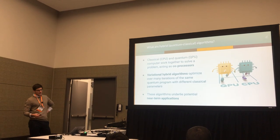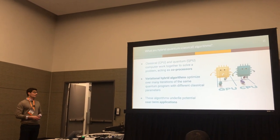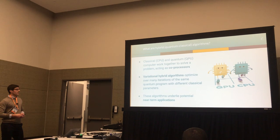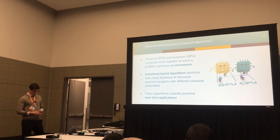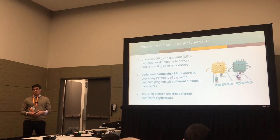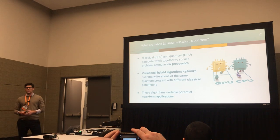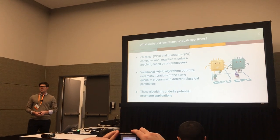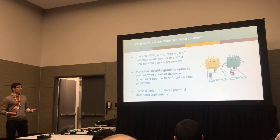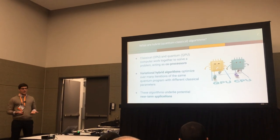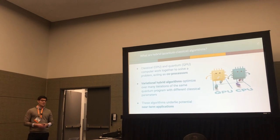Hybrid algorithms are ones in which a classical computer, or CPU, and a quantum computer, or QPU, work together to solve a problem, essentially acting as co-processors. For this talk, we'll be focusing on variational hybrid algorithms, which are ones that optimize over many iterations of the same quantum program but with different classical input parameters. The reason these algorithms are interesting is that they underlie what many people believe to be the near-term applications of quantum computing — things like quantum chemistry and combinatorial optimization.